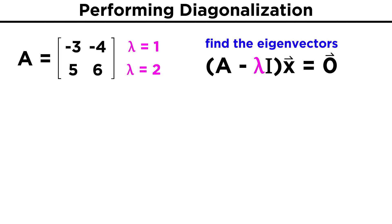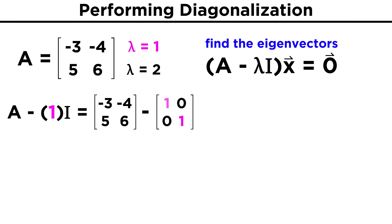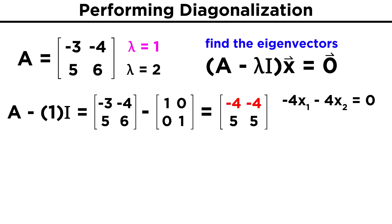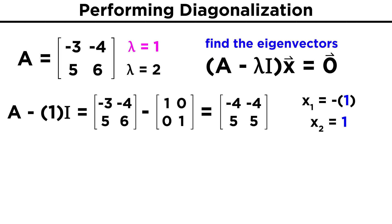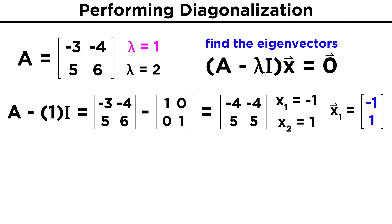Now to find the eigenvectors, we will plug in these values of lambda into the equation A minus lambda I times X equals zero, and solve for a possible vector X. Starting with lambda equals one, our matrix A minus lambda I becomes negative four, negative four, five, five. The top row ends up telling us that negative four X1 minus four X2 equals zero. Dividing by negative four, we get X1 plus X2 equals zero, or simply X1 equals negative X2. We will choose X2 equals one, which means X1 is equal to negative one, so our eigenvector for lambda equals one is negative one, one.